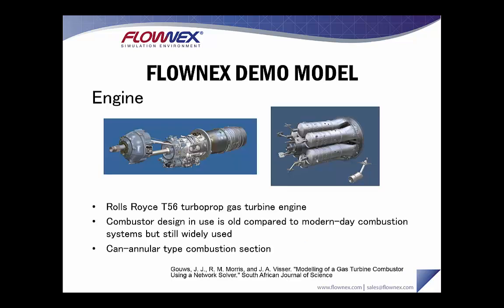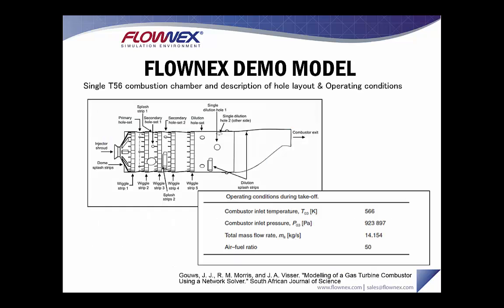I'll briefly go over the engine on which the Flownex demo model is based. It's a Rolls-Royce T56 turboprop gas turbine engine. The combustor design is older compared to modern-day combustion systems but still widely in use, and it has a can-annular type combustion section. The operating conditions during takeoff are the values we'll be using as boundary conditions for our steady-state analysis.